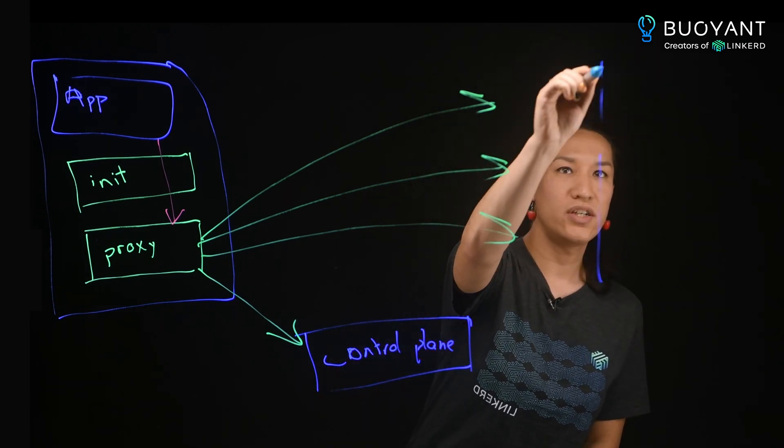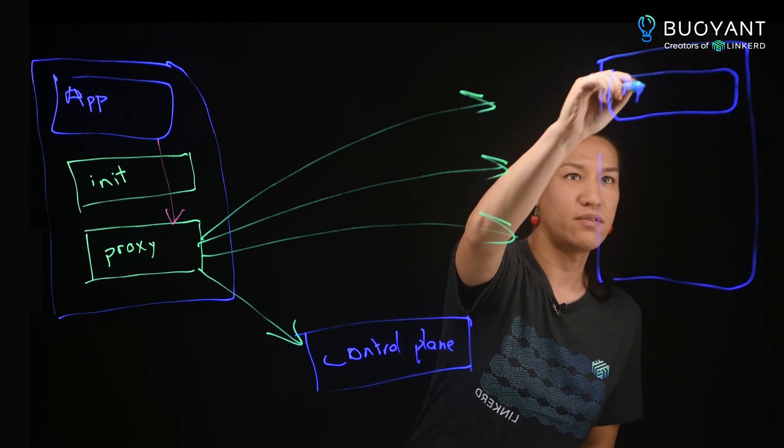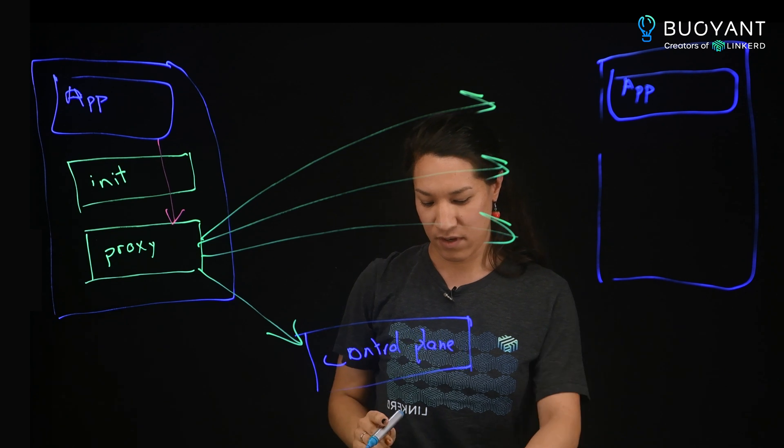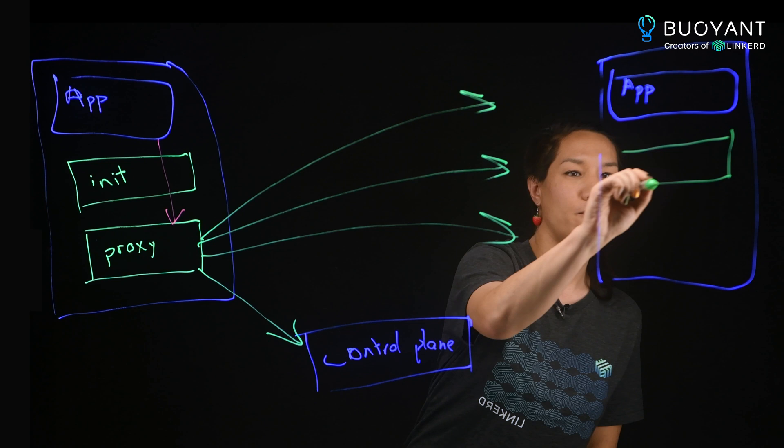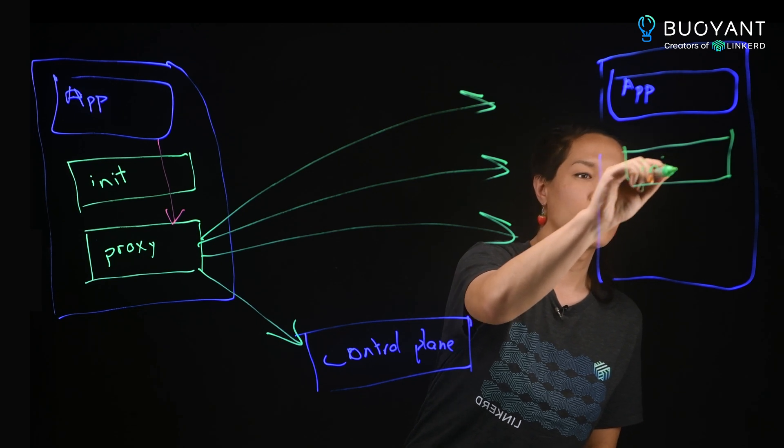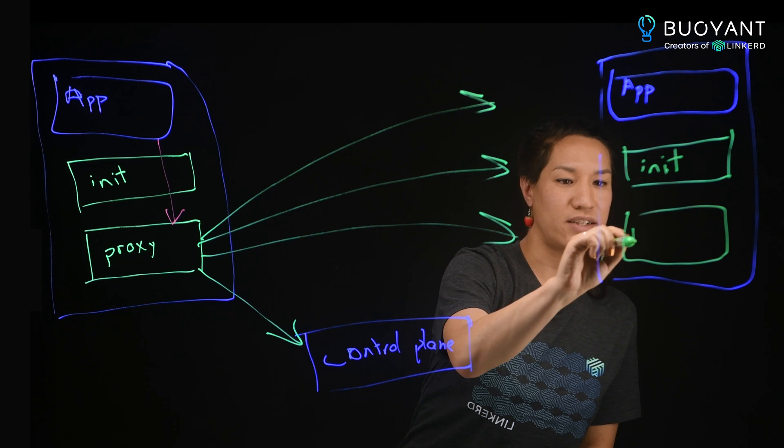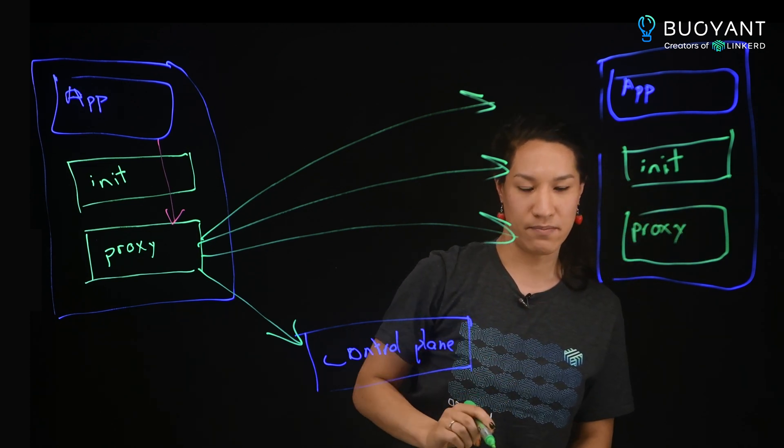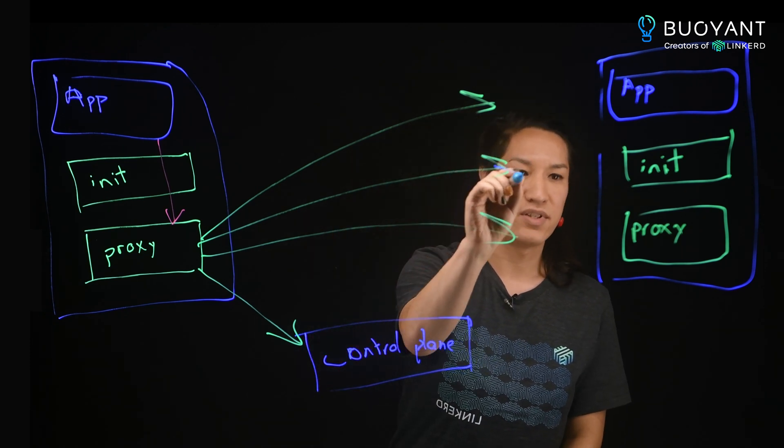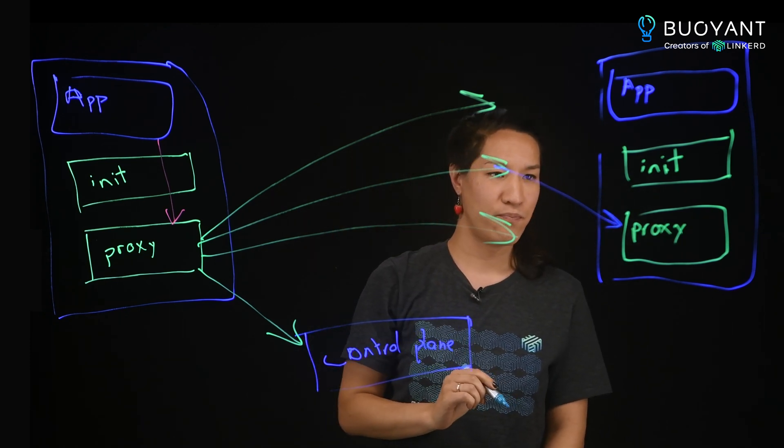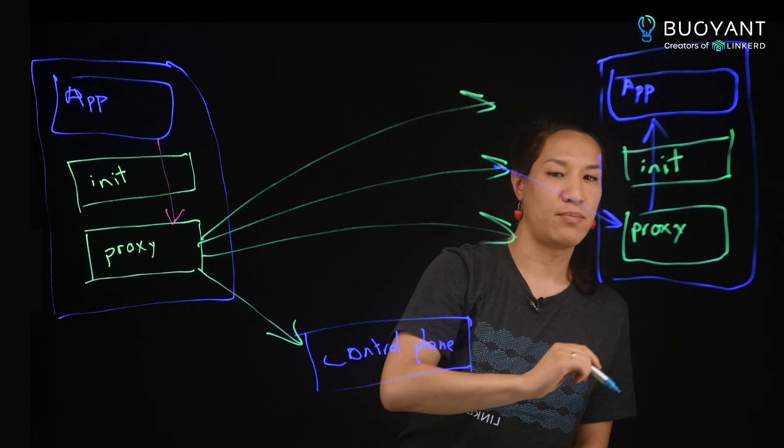Now, when that connection comes into the destination pod that has the destination application running in a container, that pod also has an init container running just like the other one, which also sets up iptables rules. It has iptables rules to redirect incoming connections to the proxy. This connection comes in to the proxy, and then the proxy knows to forward that connection up to the application.